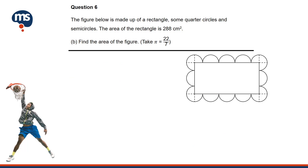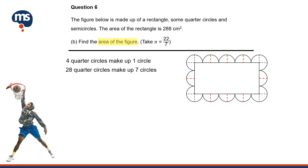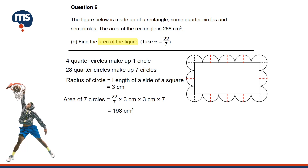Moving on to Part B. We are required to find the area of the figure. Firstly, we can divide the existing semi-circles into quarter circles. All in all, there are 28 quarter circles. Since 4 quarter circles make up 1 whole circle, 28 quarter circles make up 7 circles. The side length of a square is also the radius of each circle, which is 3 cm. The area of 7 circles is calculated using Pi × radius × radius × 7, giving 198 cm². In addition to the area of the rectangle, the total area of the figure is 486 cm².